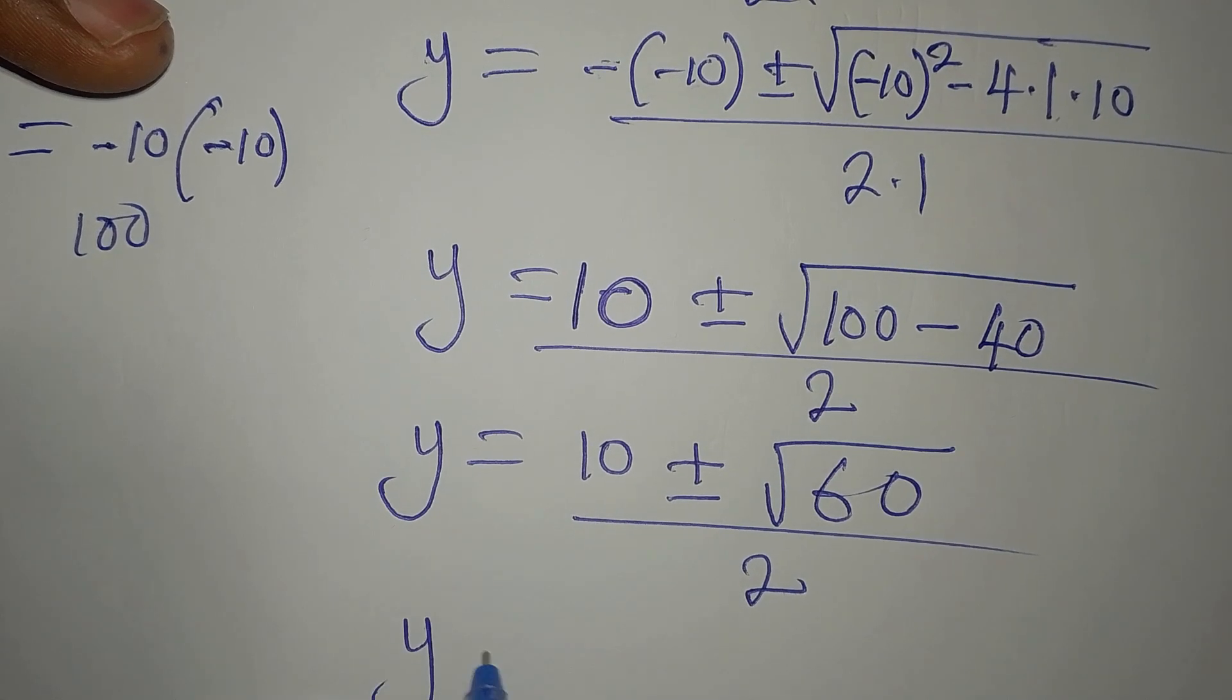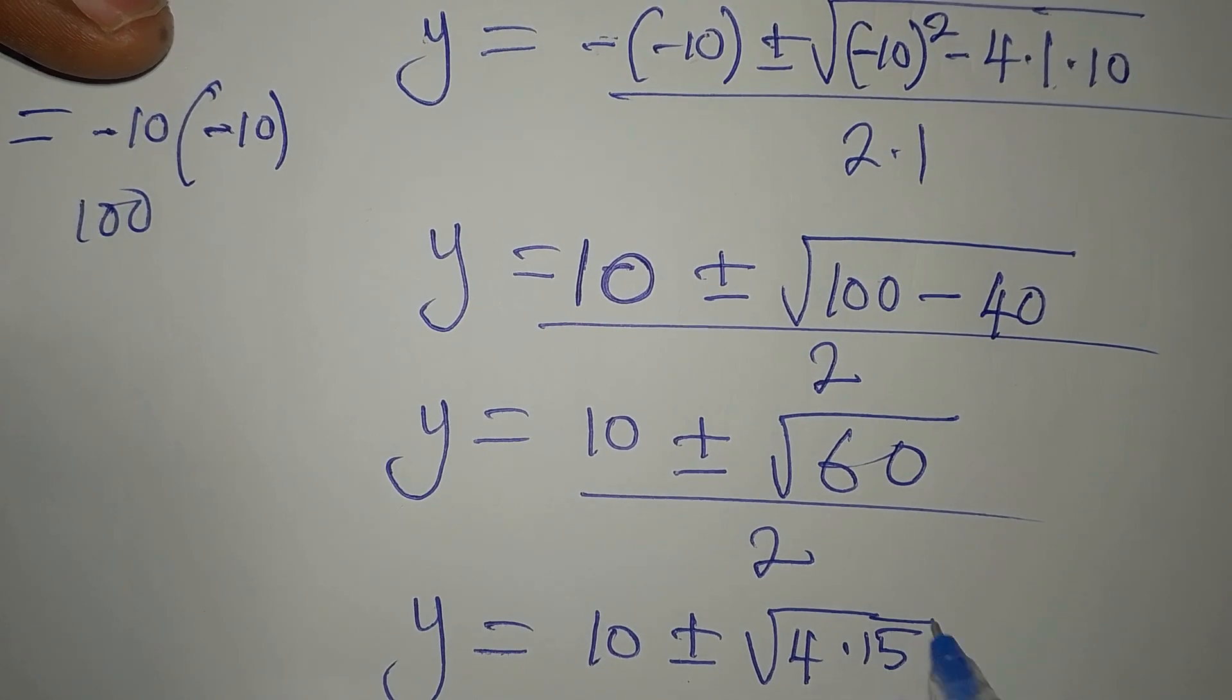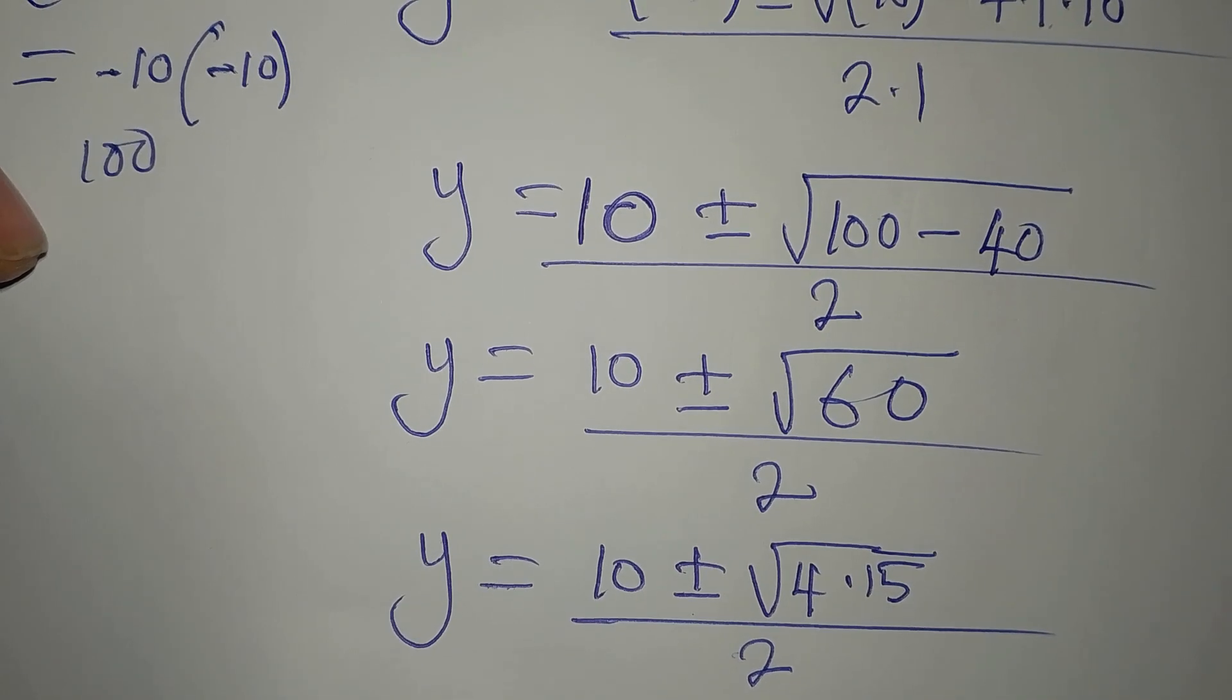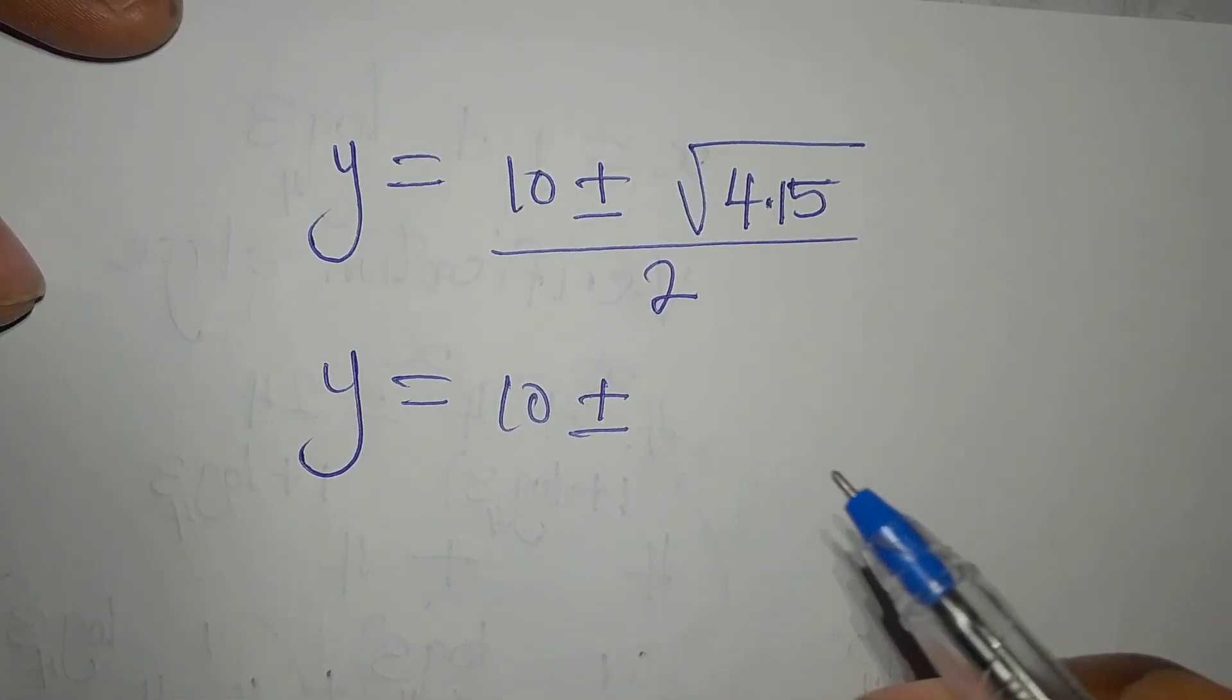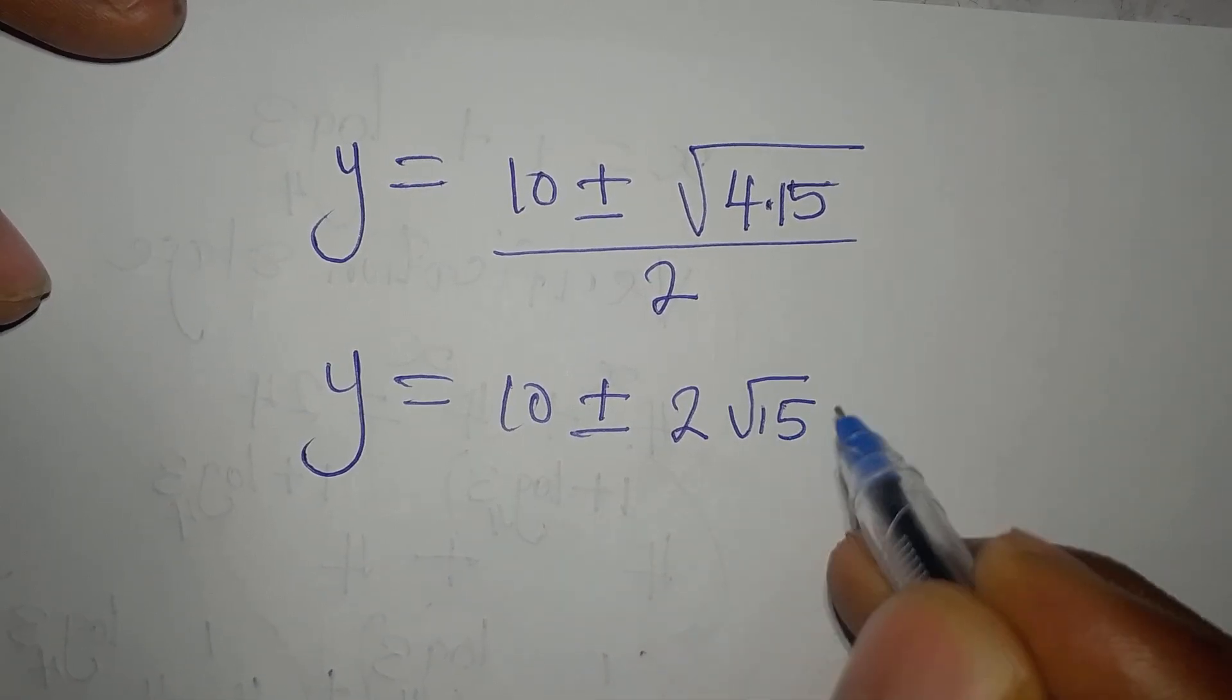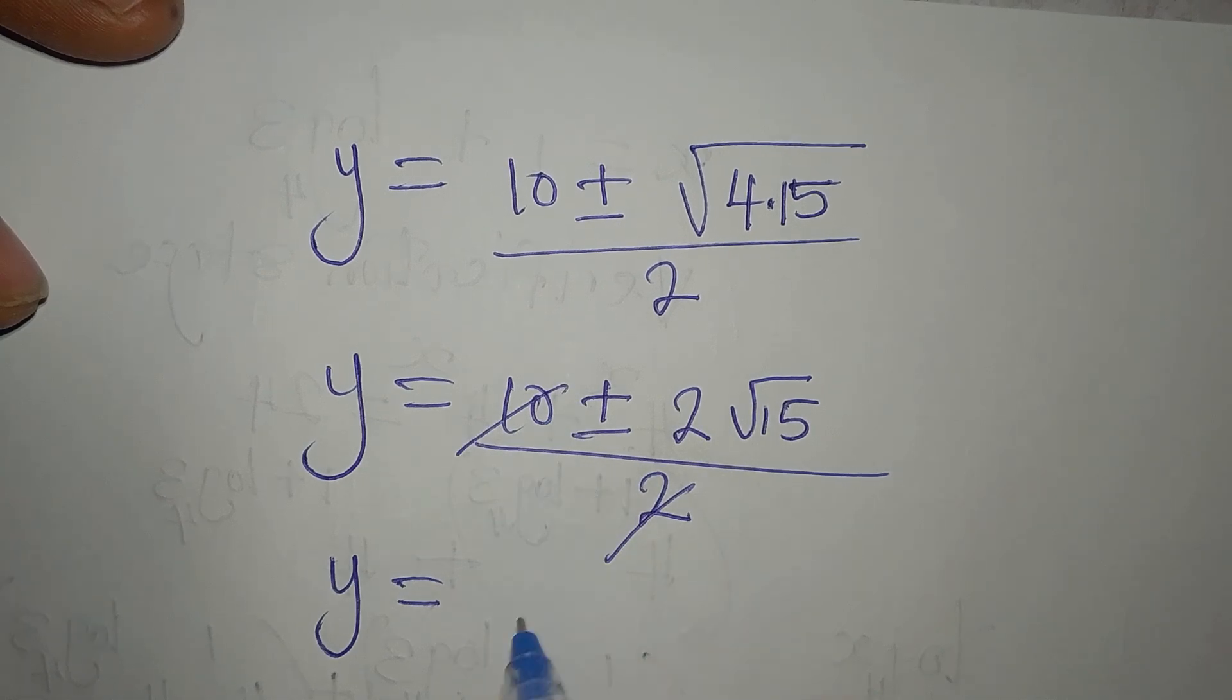So Y is 10 plus or minus square root of 4 times 15. Then, we divide it by 2. So Y now is equal to 10 plus or minus square root of 4 is 2. Then, we have root 15 divided by 2. So to continue from here, our Y will now be 2 into this is 5.